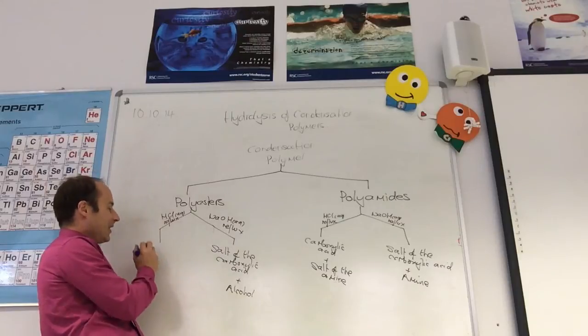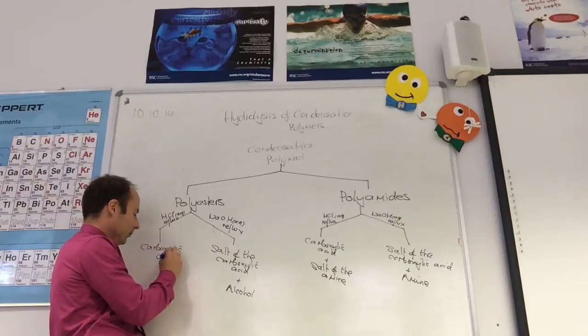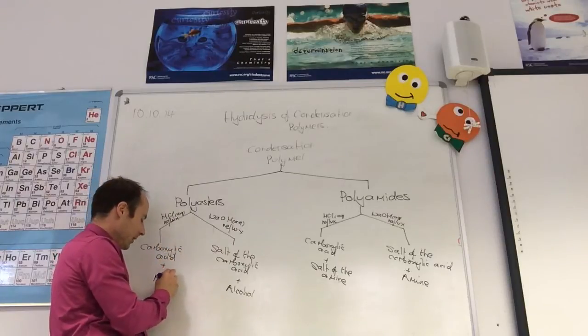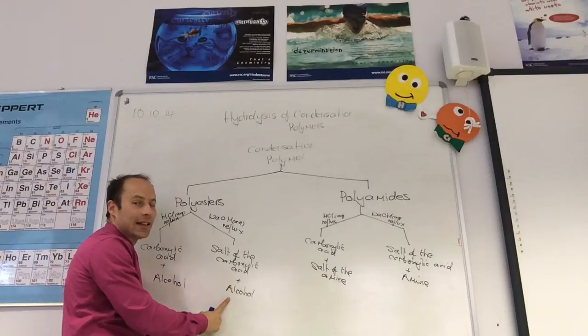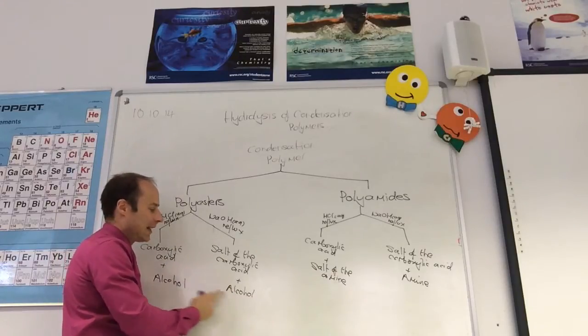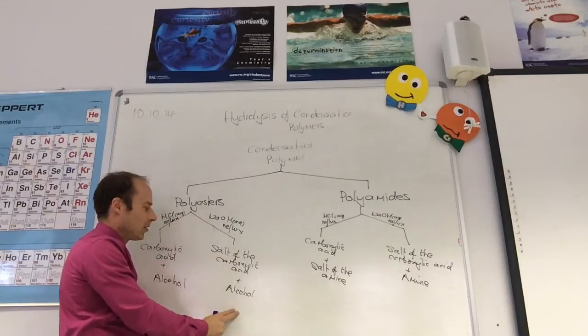If I'm in HCl, I'll make the carboxylic acid and the alcohol. Because remember, alcohols are neither acidic nor basic. So I get them because they will not react with these. So I make the alcohol straight away.